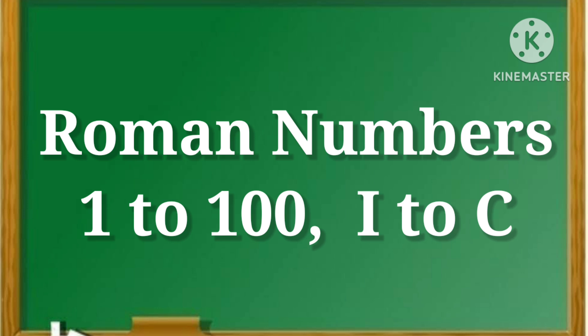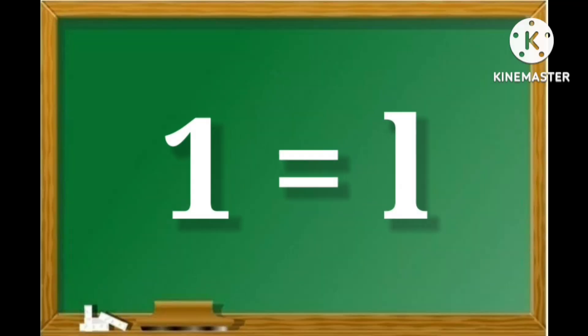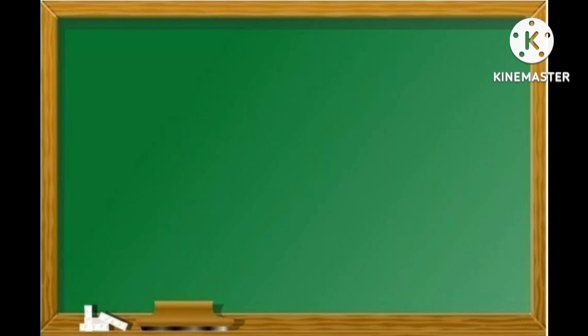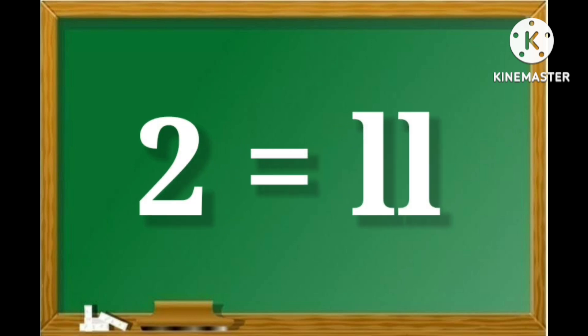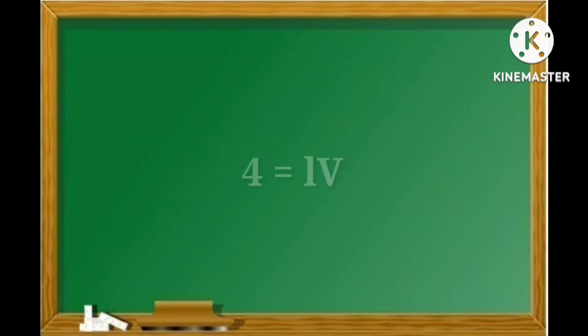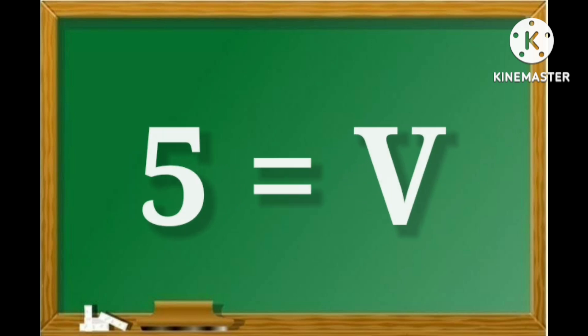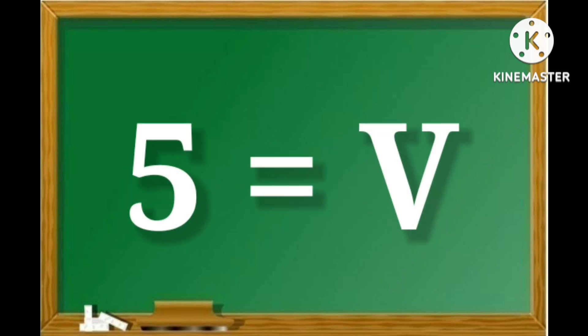So let's start. 1 is I. 2 is II. 3 is III. 4 is IV. 5 is V.